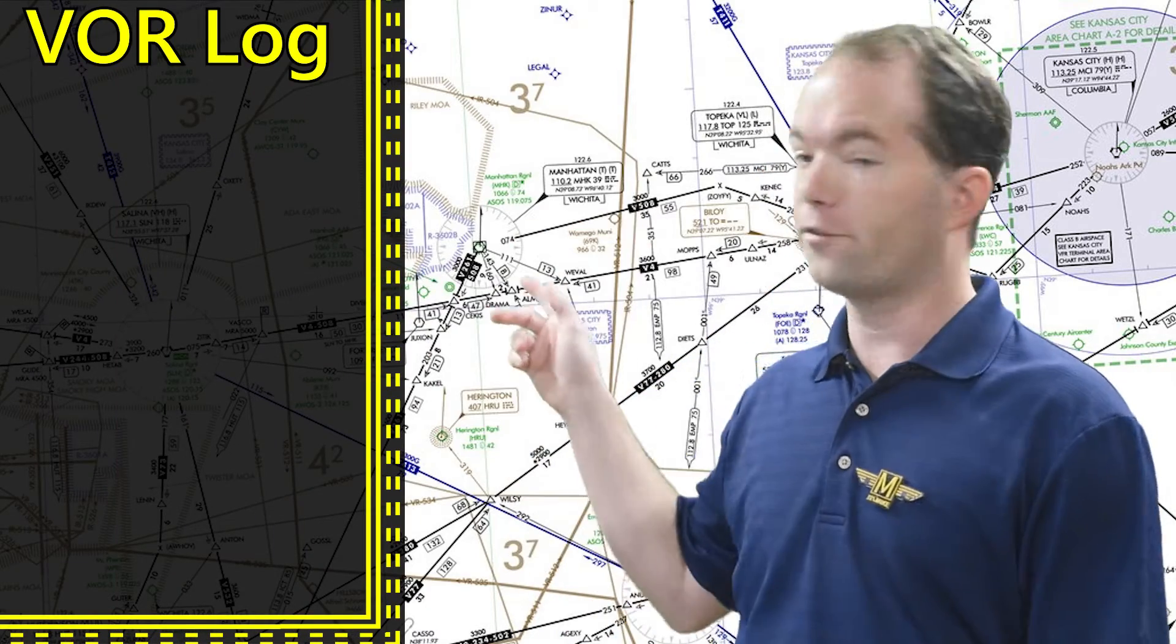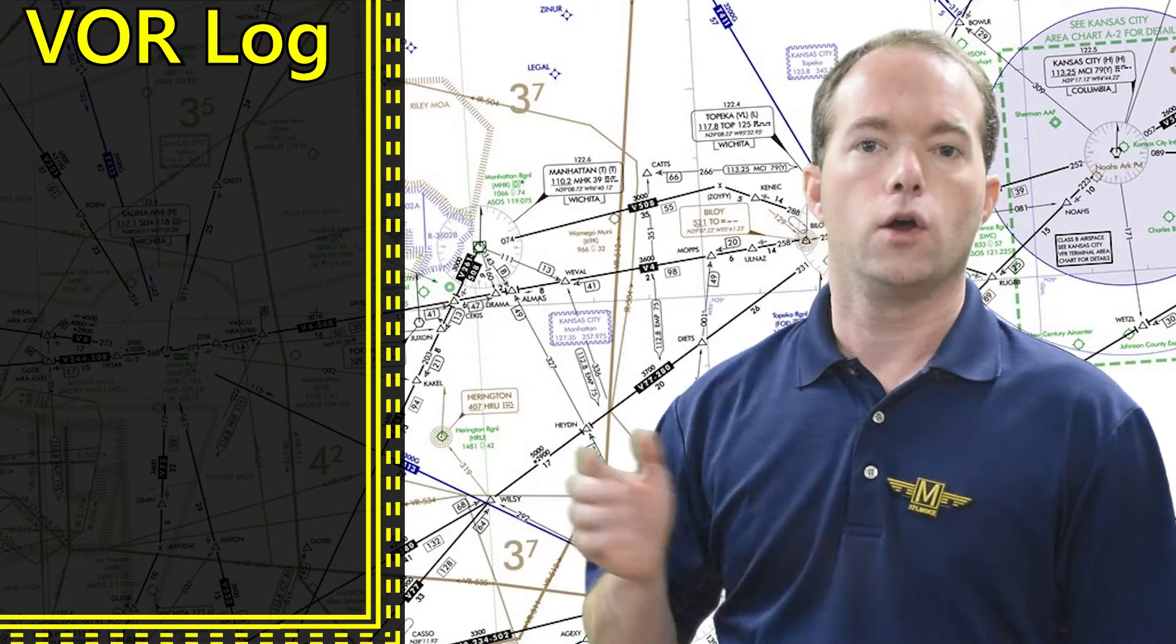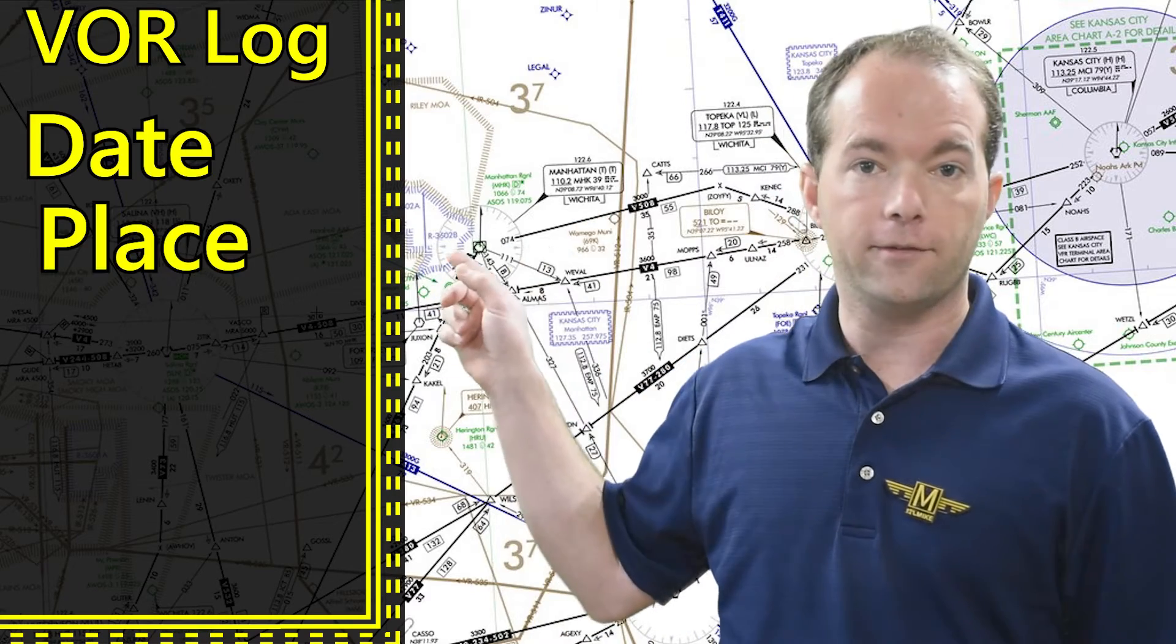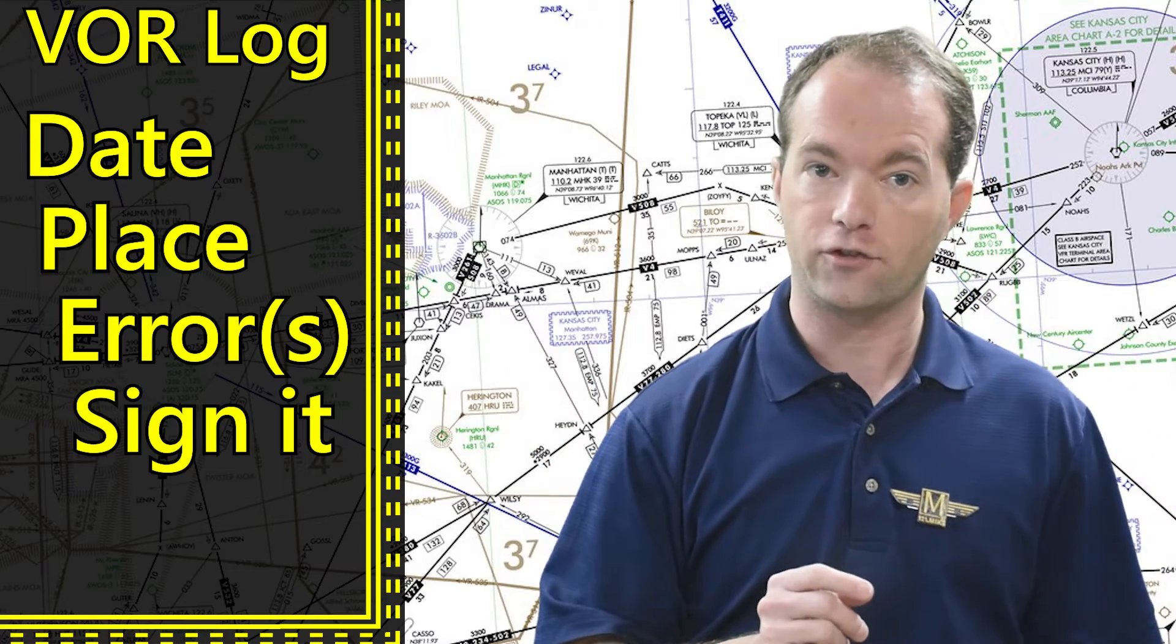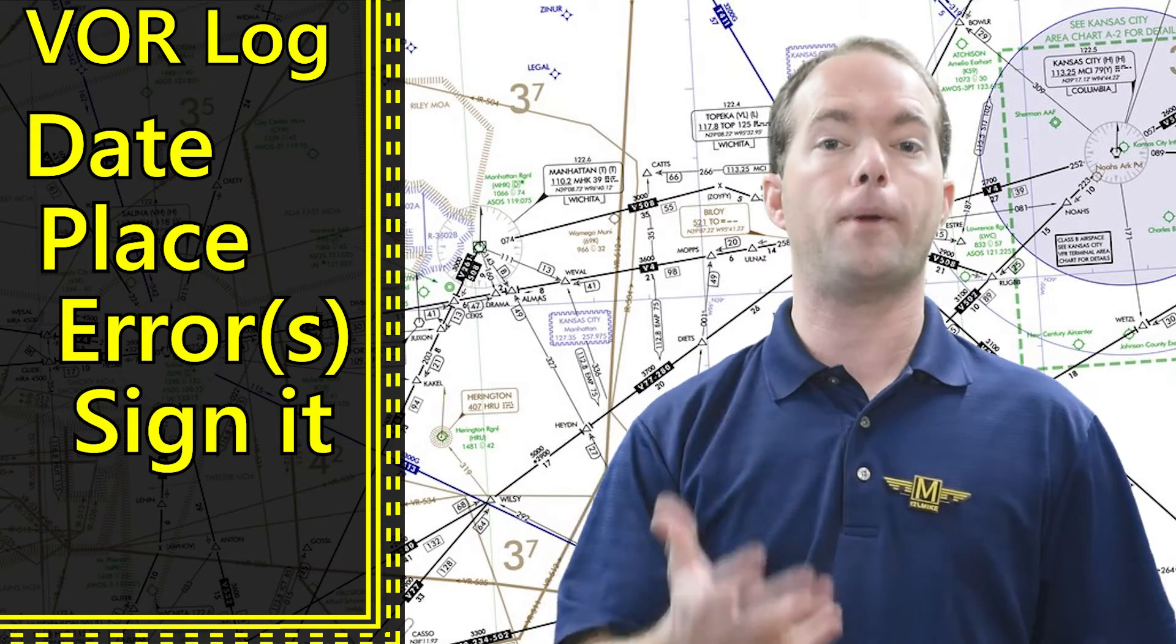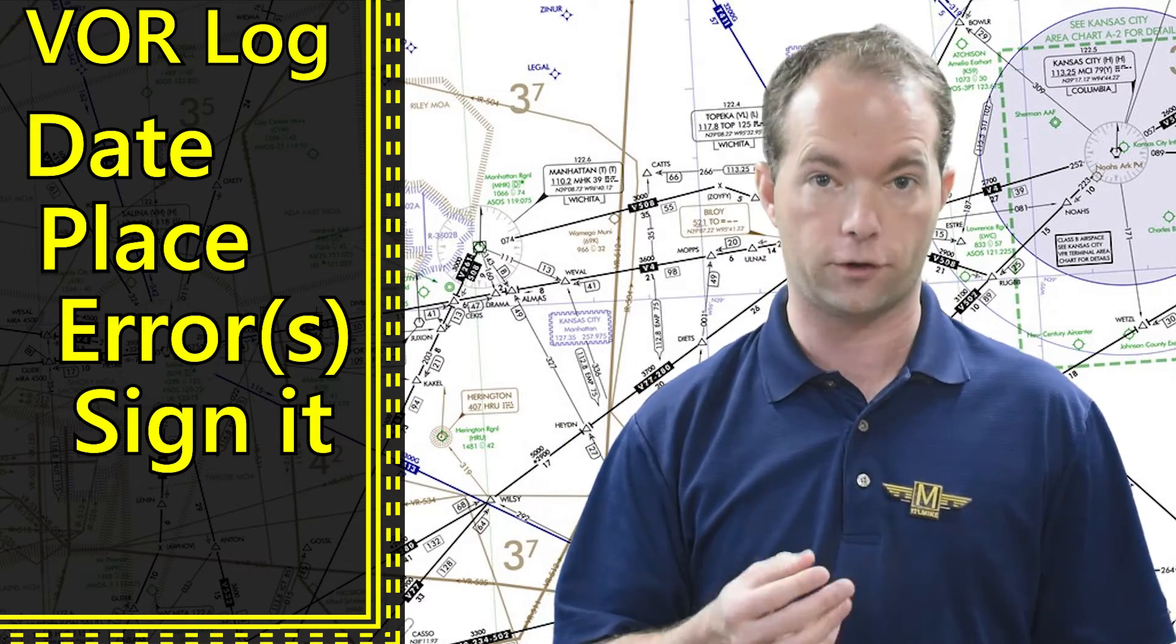You need to know this stuff for your instrument and commercial tests at a minimum. You record the date, the place, the bearing error, and you sign it. If a repair station sends the calibrated signal, then the repair station certificate holder is going to do the signing for you.